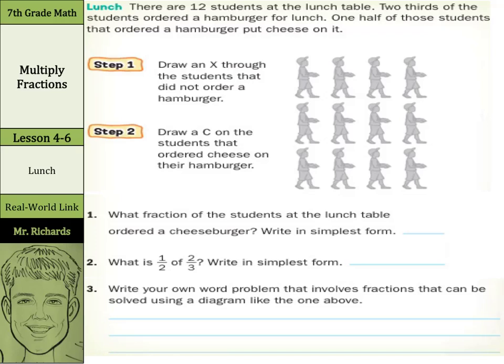That's going to be this guy, and this guy, and this guy, and this guy. As you can see, this is broken into thirds — we have one, two, three equal rows. So we can cross off one of the three rows of students who did not order a hamburger.